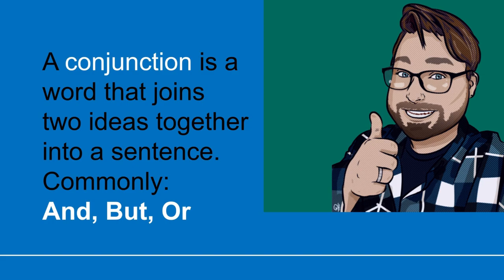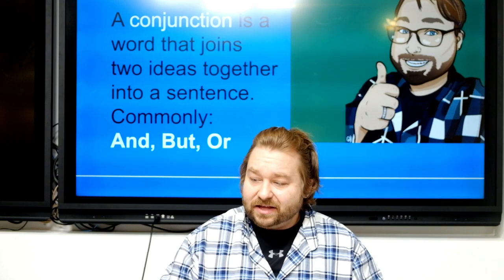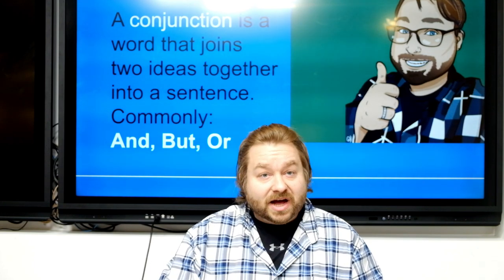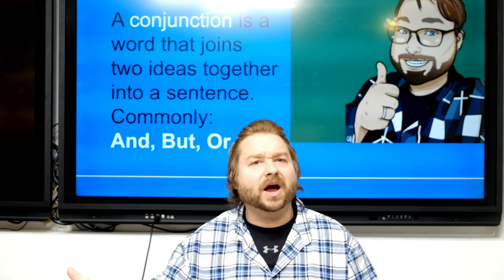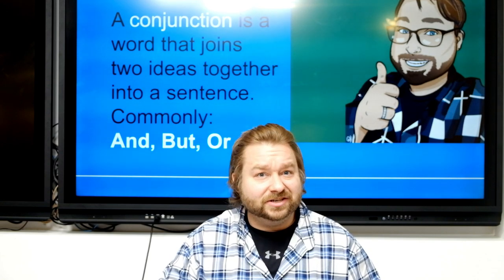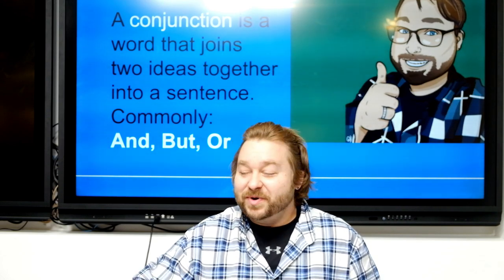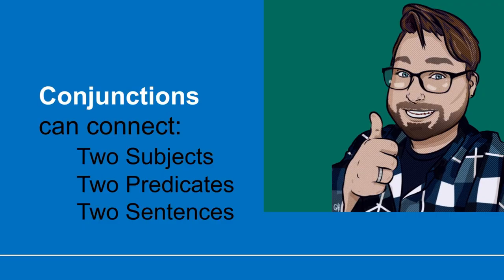The first thing we have to ask is: what is a conjunction? Well, a conjunction is a word that joins two ideas together into a single sentence. We commonly use 'and,' 'but,' and 'or.' You've probably been using these words already — you just didn't know they were called conjunctions. So how do we use these words correctly? Well, a conjunction can join two subjects, two predicates, and two sentences.